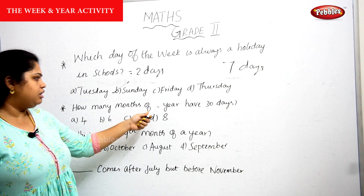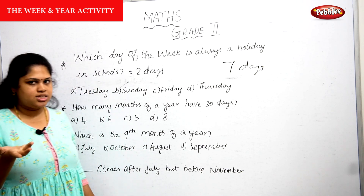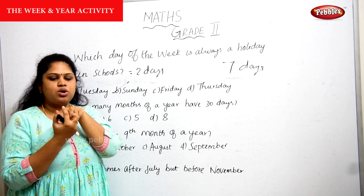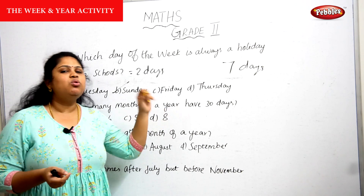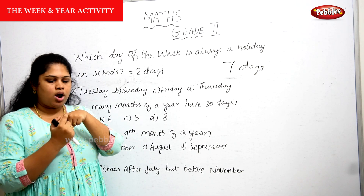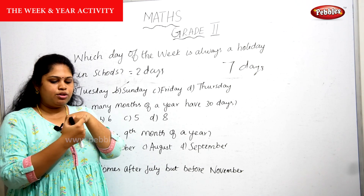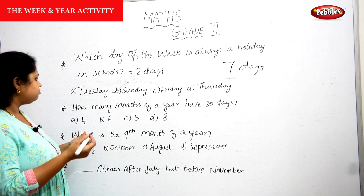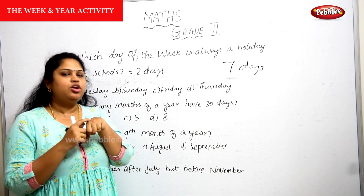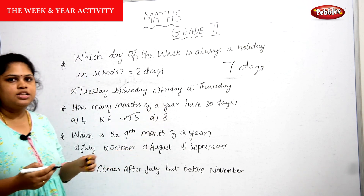How many months of a year have 30 days? Using the hand technique, the months in the lower position have 30 days. Let's count: January, February, March, April, May, June, July — that gives 4 months so far with 30 days in the first half. Then August, September, October, November, December. But February doesn't have 30 days, so subtract one. That gives us 4 months with 30 days.